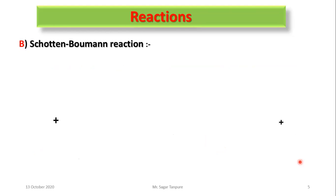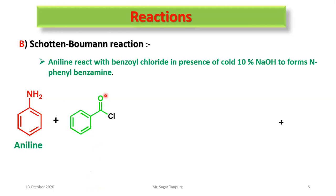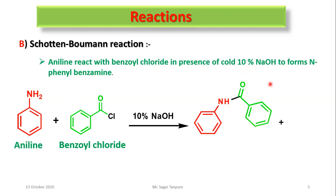Second reaction: Schotten-Baumann reaction. Aniline reacts with benzoyl chloride in the presence of cold 10% NaOH to form N-phenyl benzamide. This reaction proceeds under basic conditions. When aniline reacts with benzoyl chloride in 10% cold NaOH, it forms phenyl benzamide, and NaCl is the byproduct.